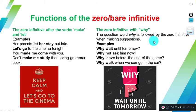We also use the zero or bare infinitive with the double-edge question 'why'. Since the to-infinitive answers the question of why we do something and the purpose of why we do something, it's logical that we use the zero infinitive with 'why'. For example: Why wait until tomorrow? Why not ask him now? Why leave before the end of the game? Why walk when we can go in the car? The structure is the why question followed by the zero infinitive.